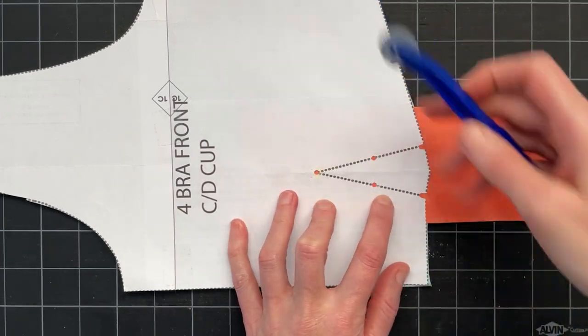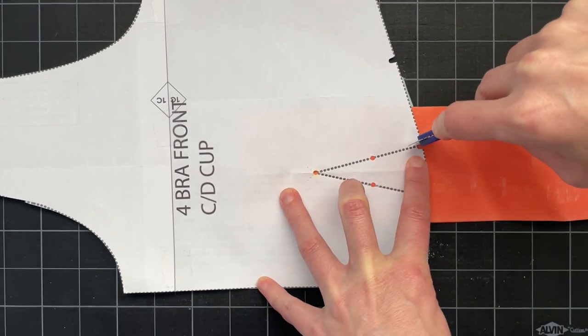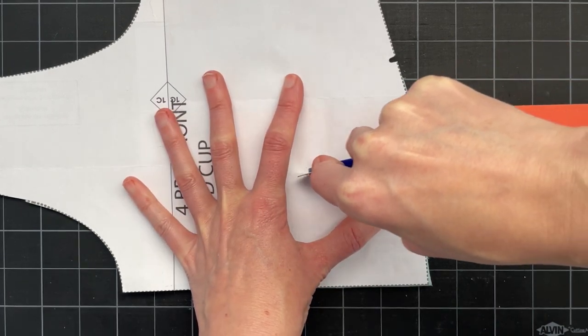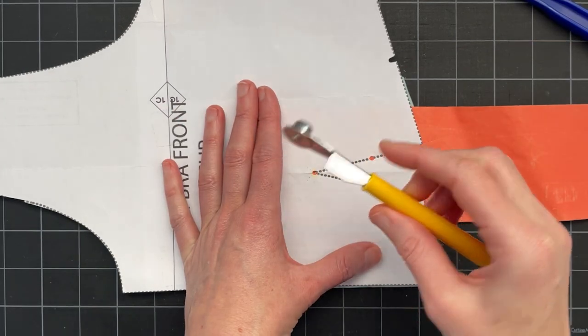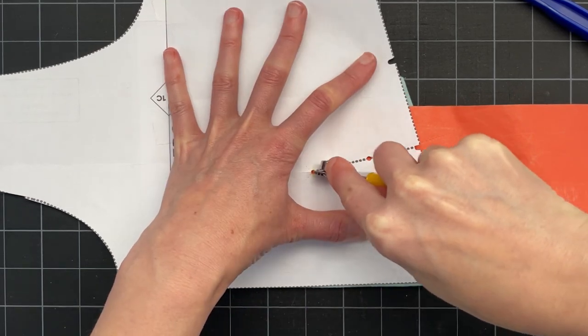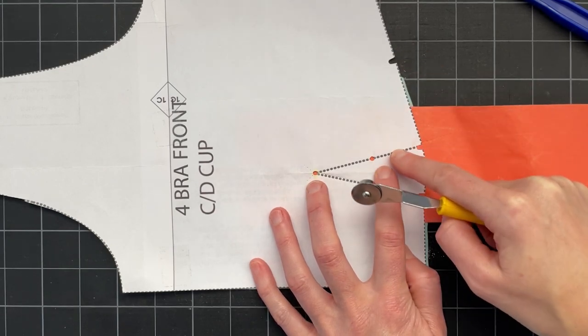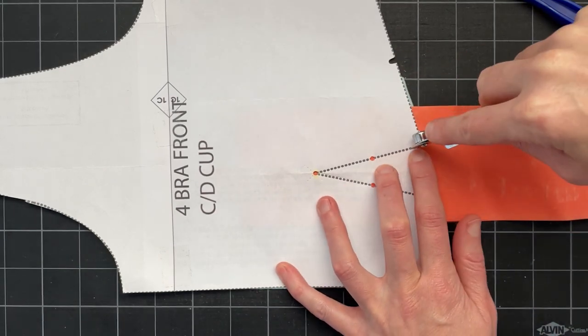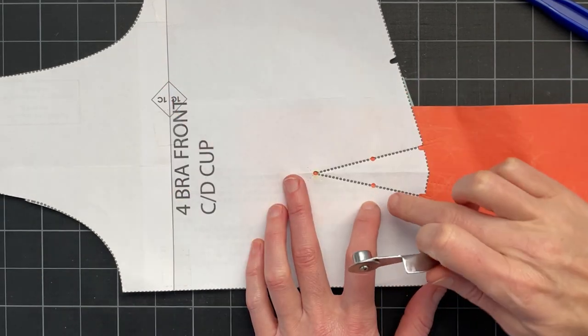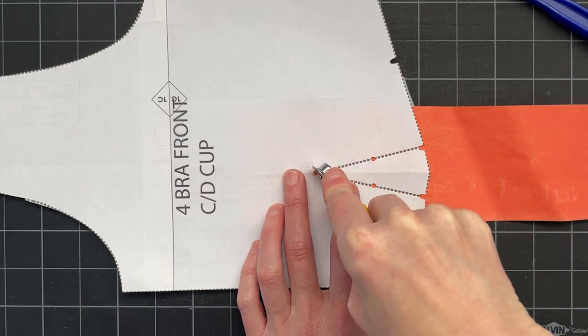You want to hold everything in place and then just draw a line with our wheel and you want to press pretty firmly. It's the same idea if you use the non-serrated wheel. I think one benefit of this wheel is that you're not punching holes in your pattern so it kind of preserves the integrity of that paper a little bit better. If you want to mark the dots in the dart you can make a little x.